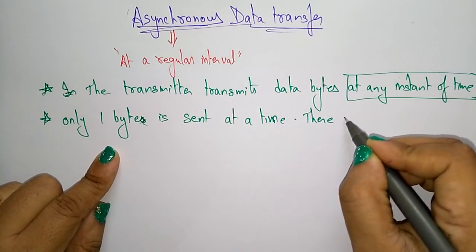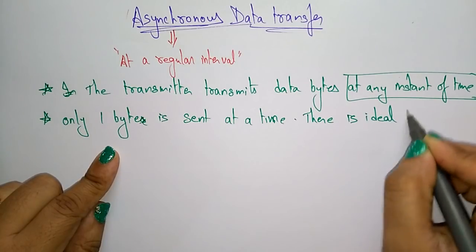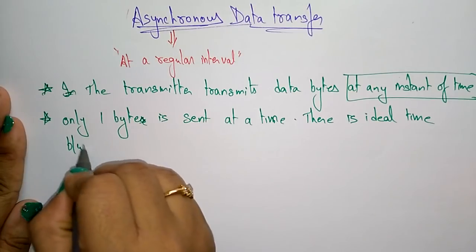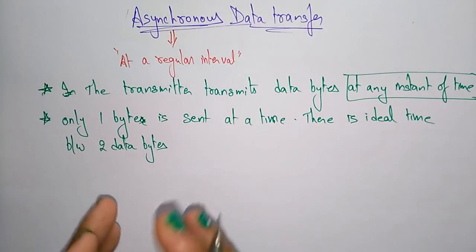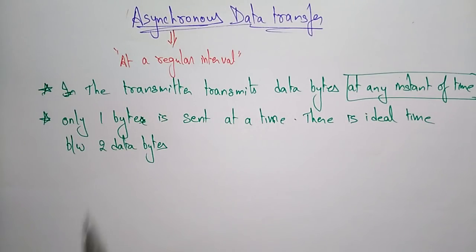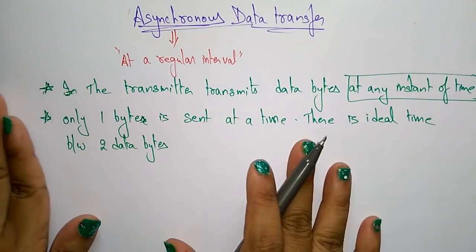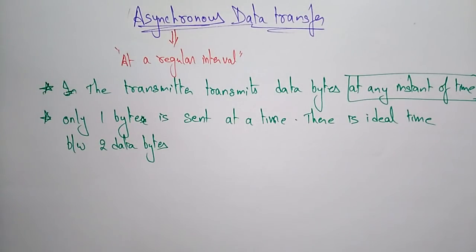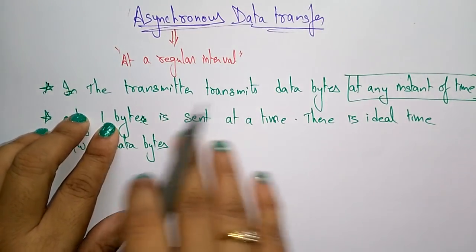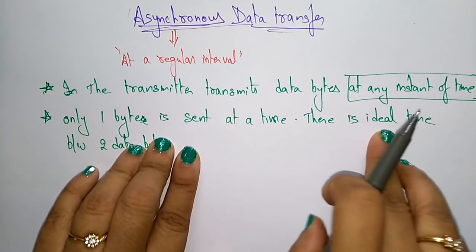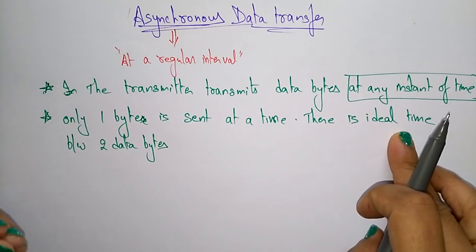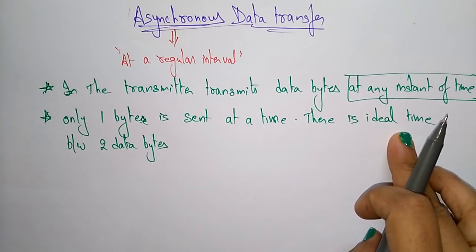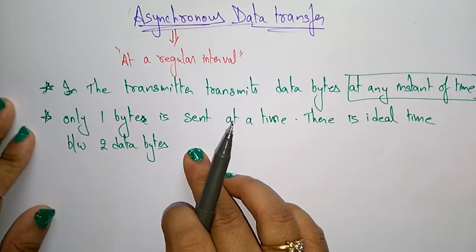There is idle time between two data bytes. So you can understand from this point that we are not concentrating on the time — we just want to transmit the data at any instant. Only one byte is sent at a time, and in between bytes there can be some idle time, meaning the system can hold for some time between sending bytes.